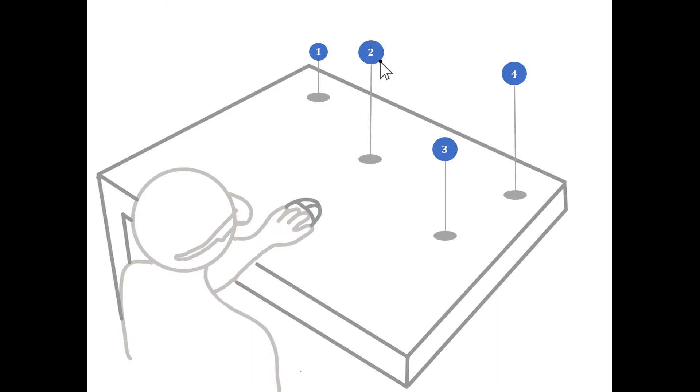It works in three steps. First, we update the cursor array's origin by attaching it to the user's viewpoint. Then, we update the cursor array's direction based on the mouse movement.